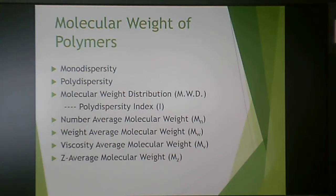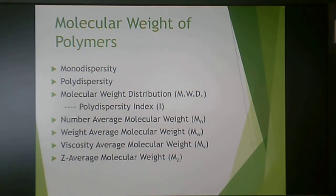We'll define the types of average molecular weight: number average molecular weight, weight average molecular weight, and briefly viscosity average and Z-average molecular weight. The big ones focused on by polymer scientists are number average and weight average molecular weight, because those two contribute to the polydispersity index, which is really one of the most important things in thermoplastic processing.